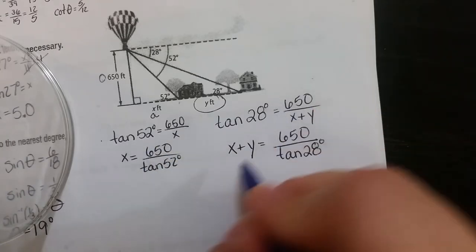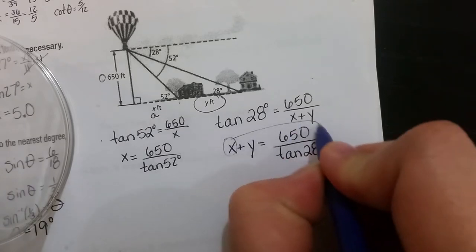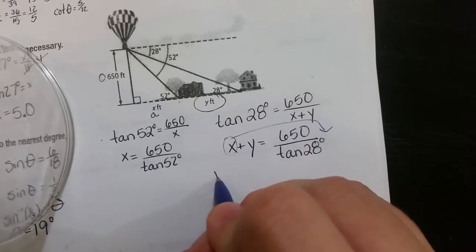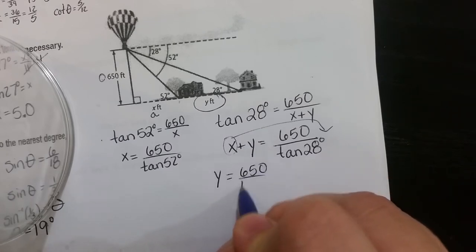Now, okay, I guess I can do this two ways. Let me say to you, take the X and minus it from this side. So you get Y equals 650 over tan 28, and then you're going to minus X.